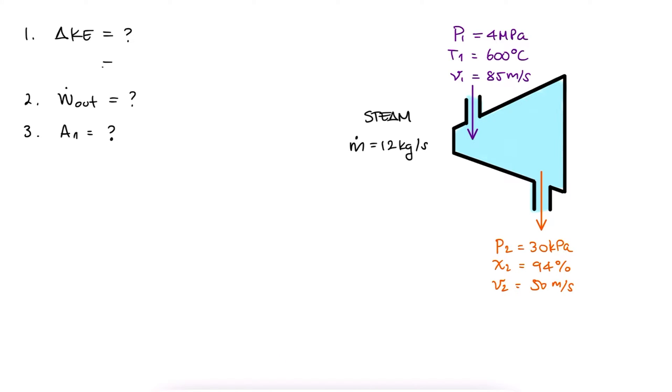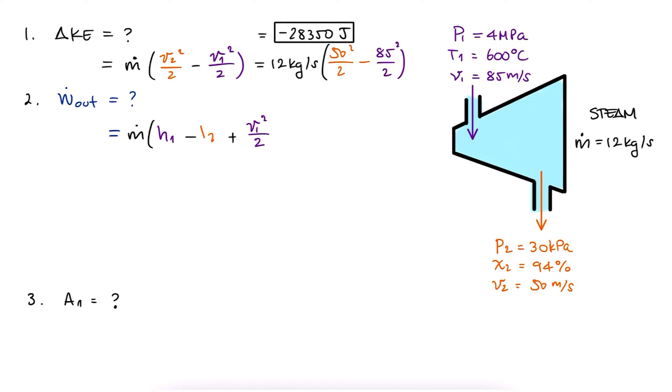The change in kinetic energy can be written in terms of V2 and V1. We simply substitute the given values to find it. The power output from the equation we derived in the main lecture video is dependent on the velocities and the specific enthalpy values, so we'll need H1 and H2. We'll come back to this in a second to see if we need more values from the tables besides just these specific enthalpies.